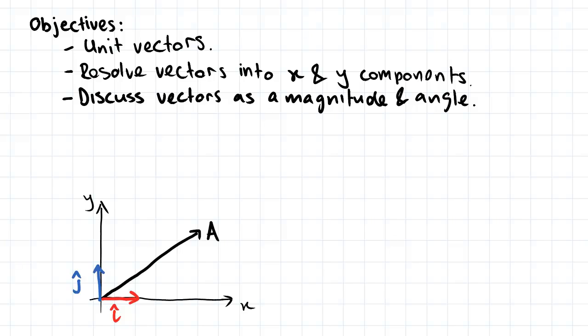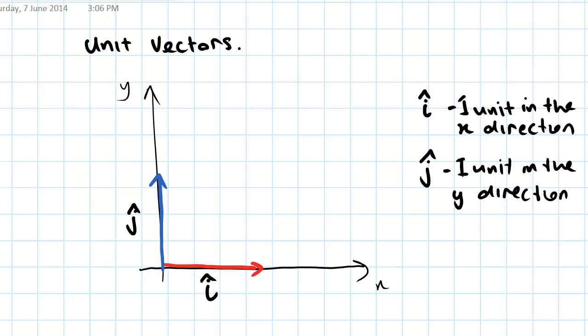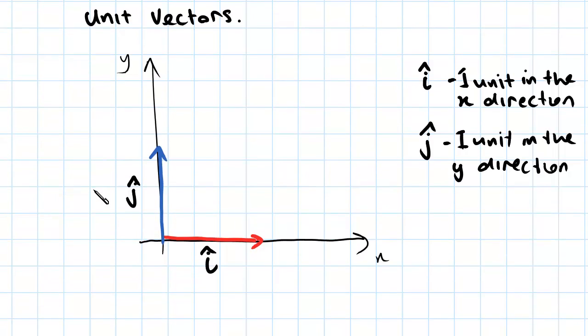We'll start off by looking at unit vectors. So what we have here is a simple xy plot, and on it we've drawn two vectors. We've got vector i and we've got vector j.